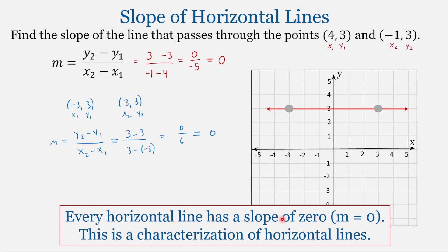Every horizontal line has a slope of 0, so m equals 0. This is what we call a characterization of horizontal lines. If you have a horizontal line, it will have a slope of 0. And if you have a line with a slope of 0, it is a horizontal line. With horizontal lines, the y-values are always the same, so the numerator of the slope will always be 0, resulting in a slope of 0.